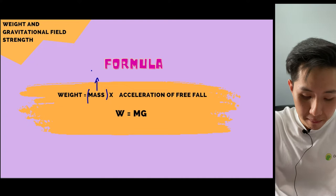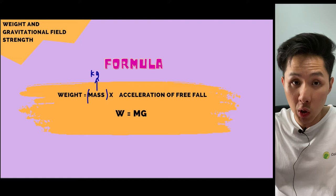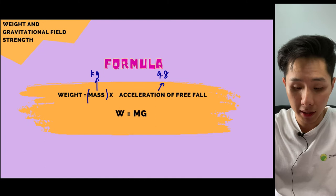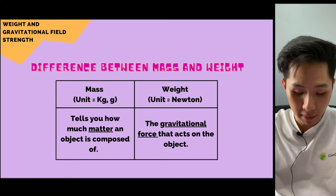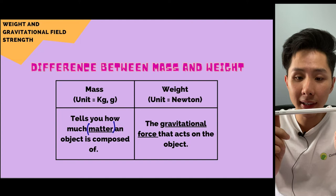Mass is measured in kilograms. To calculate weight, the formula is W = mg: multiply the mass in kg by the acceleration of free fall. The acceleration of free fall is usually 9.8 on Earth, and has different values on other planets. Mass is how much matter an object is composed of — it's the same on Earth or on the Moon. Weight, however, is the gravitational force acting on the object and will differ on the Moon.